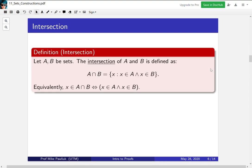The first one is intersection. If you have two sets A and B, the intersection of A and B is defined to be all x such that x is in A and x is in B. So it's all x that are in both A and B simultaneously.